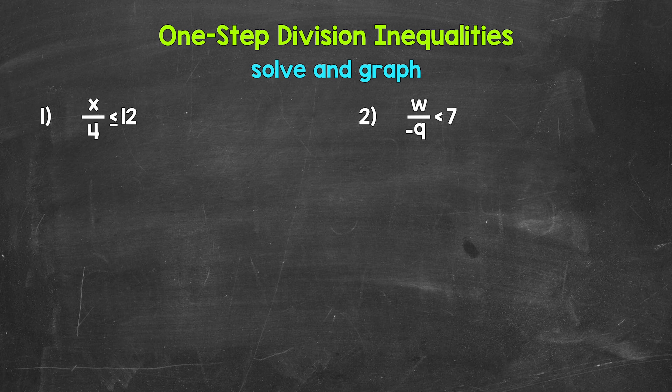Remember, we need to flip the inequality symbol — change the direction — when multiplying or dividing both sides by a negative. Now once we solve the inequality, we can graph the solutions — all of the values that make the inequality true.